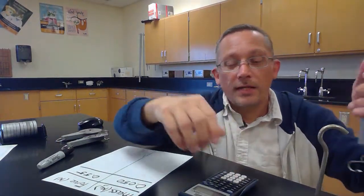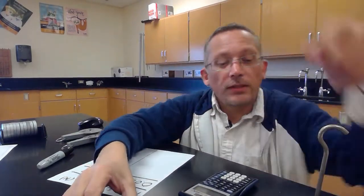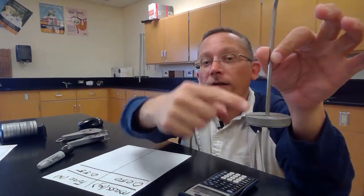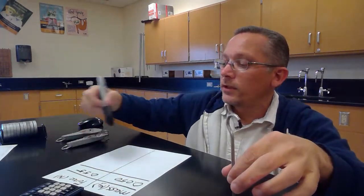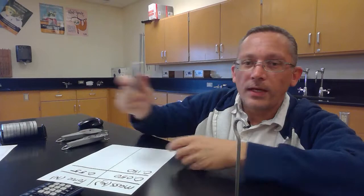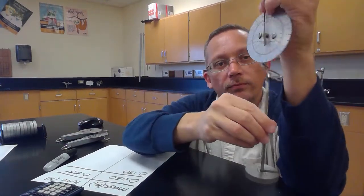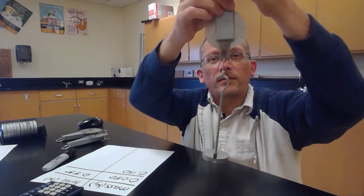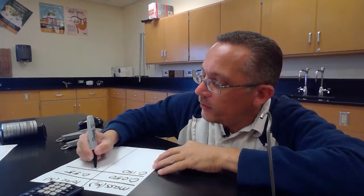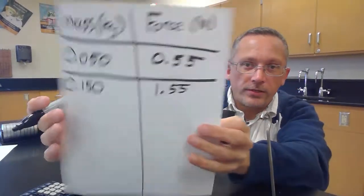Okay, so now what I'm going to do is I'm going to add some masses. I'm going to put 100 grams on there. So together, the mass hanger and the mass will be 150: 50 for the hanger and 100 for the mass. So 150 grams is 0.150 kilograms, and let's see how much that weighs. So I'm going to put that on there and it looks like maybe just a little bit more than 1.5 Newtons. Let's say 1.55 looks like a good reading, and there's our second data point.